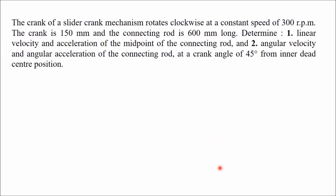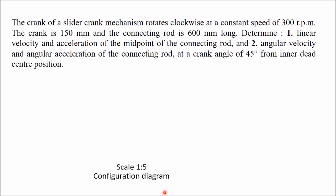Example: The crank of a slider crank mechanism rotates clockwise at a constant speed of 300 RPM. The crank is 150 mm and the connecting rod is 600 mm long. We need to determine the linear velocity and acceleration of the midpoint of the connecting rod, and the angular velocity and angular acceleration of the connecting rod at a crank angle of 45° from the inner dead center position. First, draw the configuration diagram.